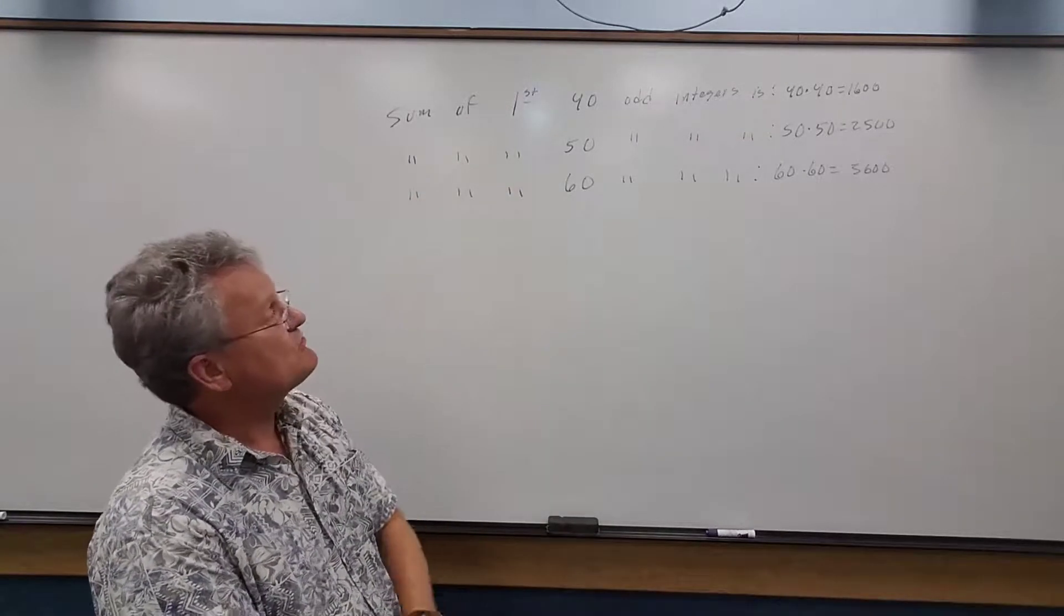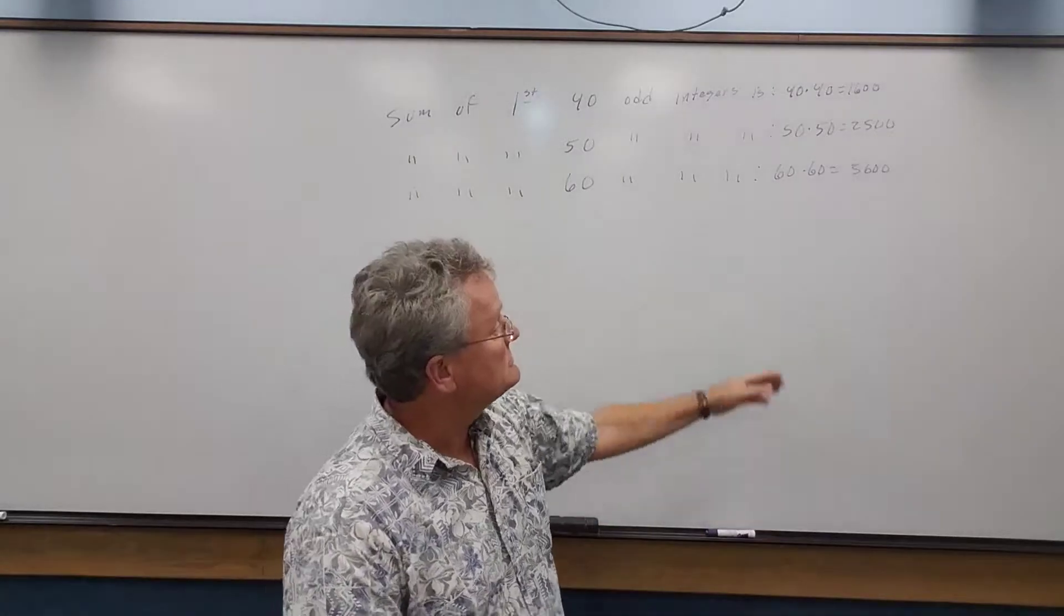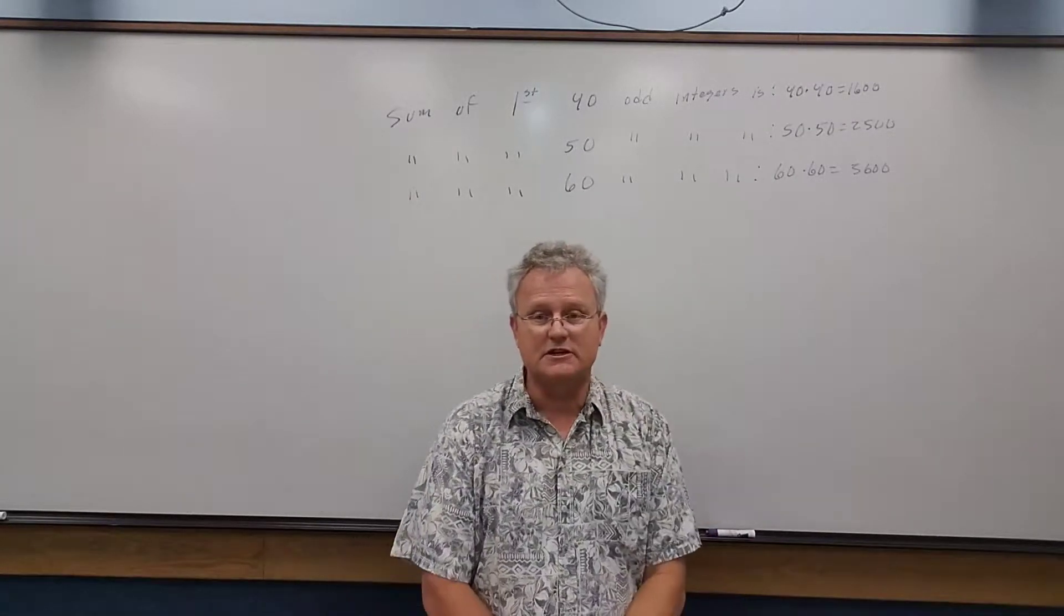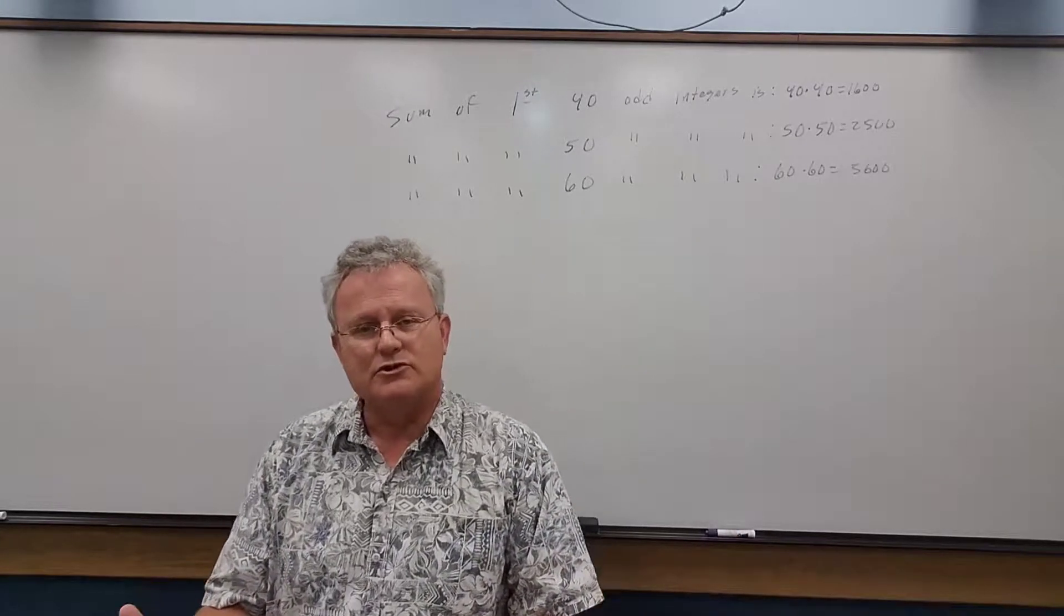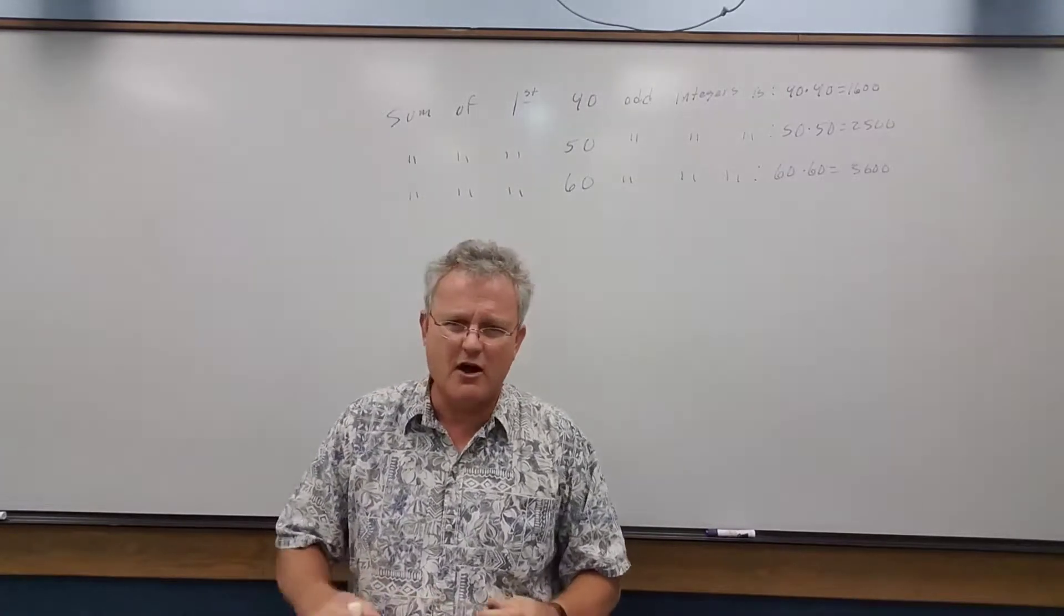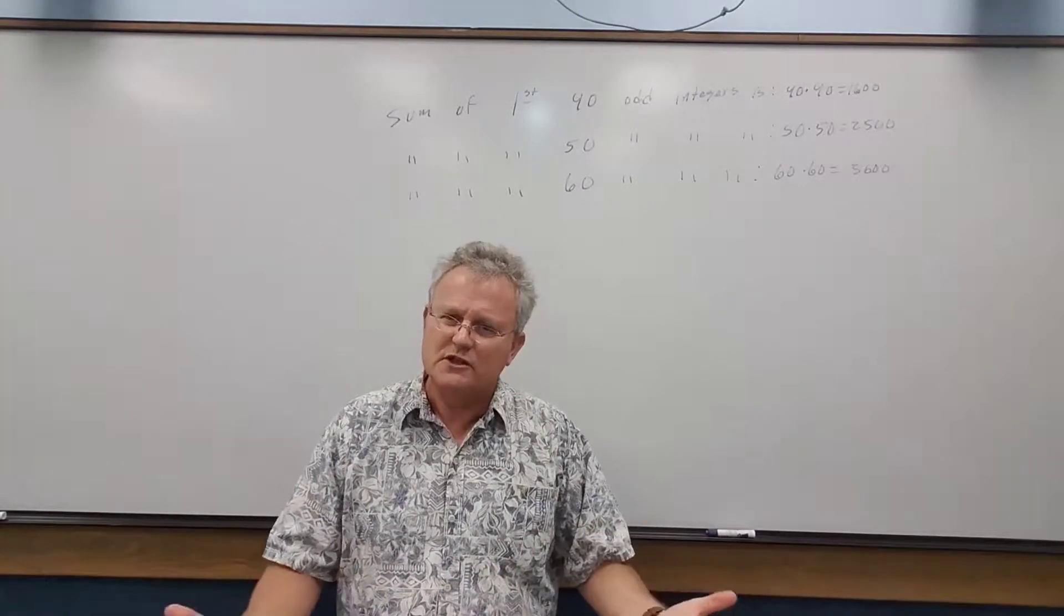Similarly, the sum of the first 50 odd integers is just 50 times 50, same for 60. And the question you want to pose to students is why does this work? Have them try to figure out why does it work like this?